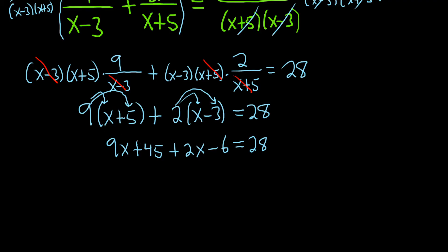All right, so now we can combine like terms. So 9x plus 2x is 11x. 45 minus 6 is 39. And that's equal to 28.